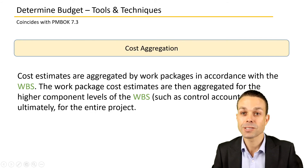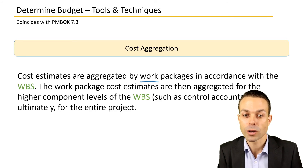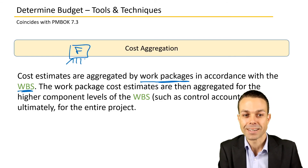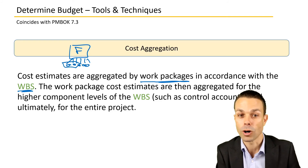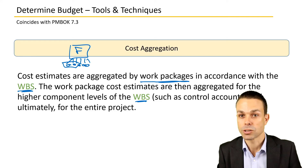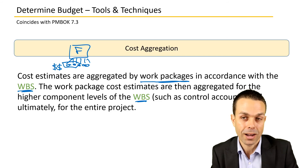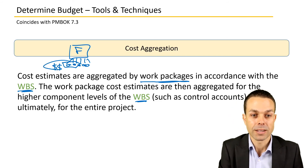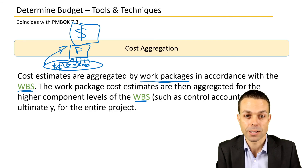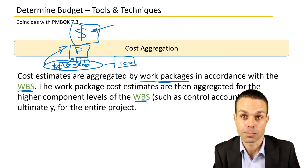Cost aggregation is also a tool and technique. Cost estimates are aggregated by work packages in accordance with the work breakdown structure. We break high-level features down into smaller work packages that a team can work on, and the experts doing the work estimate how much each package will cost. All of these estimates are aggregated up to the higher component levels of the WBS, such as control accounts, resulting in one overall figure that becomes a key part of the budget.